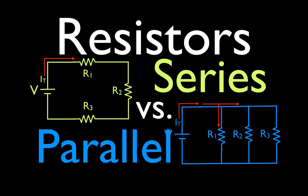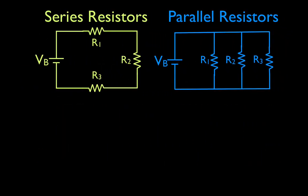In today's video I'm going to go over the rules concerning resistors in series and resistors in parallel. On the left hand side we have our resistors in series and on the right side we have our resistors in parallel. I'm going to go over the rules concerning the voltage, the current, and then the equation we use to calculate the equivalent resistance in each case, and then we'll say a few things about Ohm's law. These rules apply to series and parallel resistors regardless of how many resistors there may be in each circuit, whether it's 1, 2, 5, 10, 100, or whatever.